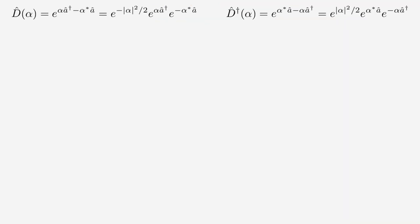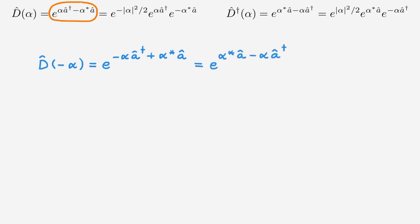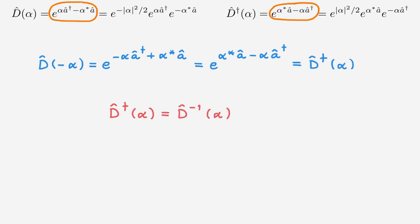The next property is the displacement operator D of minus α. Using the definition, we write this as the exponential of −α a† + α* a, simply replacing α by −α. Changing the order in the exponent — which we can do since addition of operators is commutative — and comparing with the expression for the adjoint, we see they are the same. This means the inverse of a displacement by α is simply a displacement by minus α.